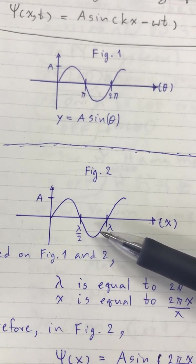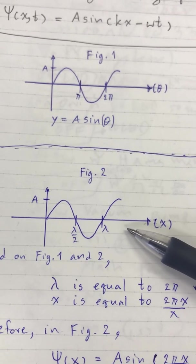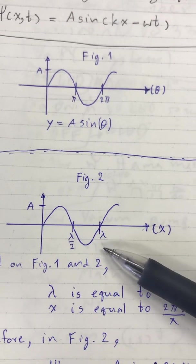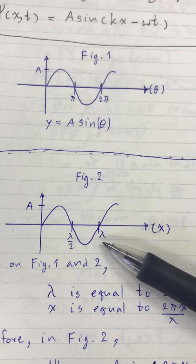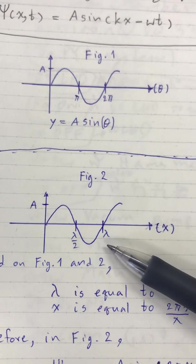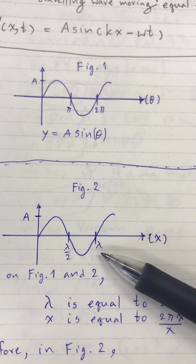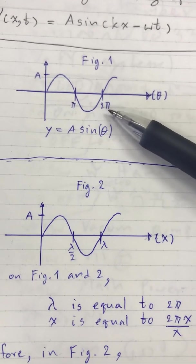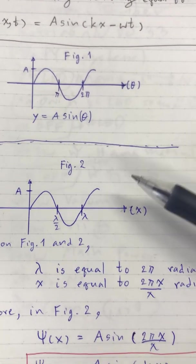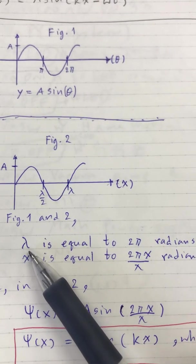By comparing the two figures, you can see that when the sine wave moves in space along the x-axis, one full cycle of the sine wave is called the wavelength, which we call lambda. This lambda is equal to 2π radians.